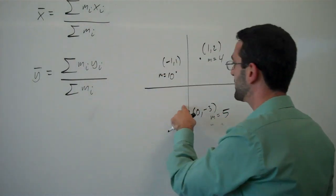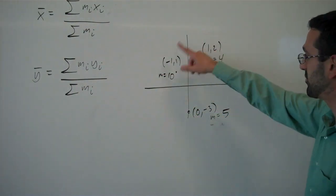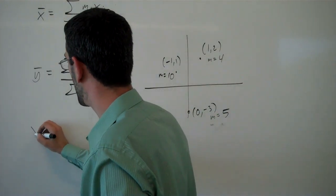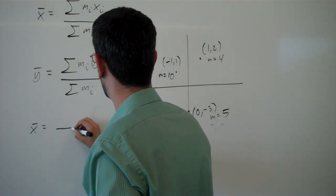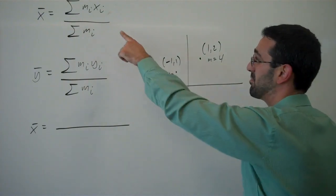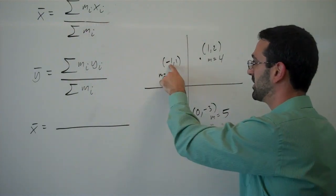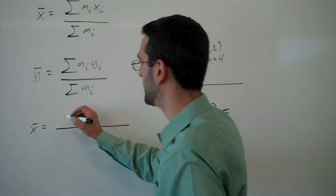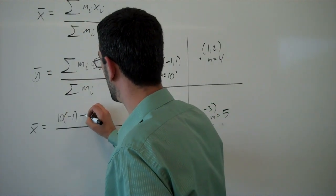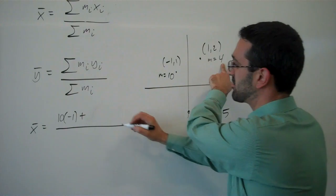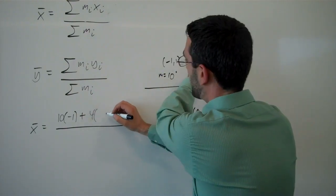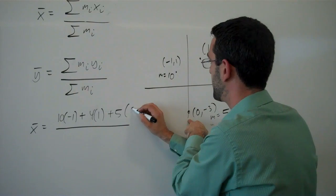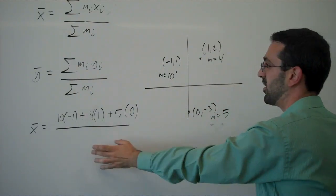Let's see if we can find the x and y center of mass for this system of point masses. For the x̄, we have, again, mass times x value. Here, mass of 10 times an x value of -1. So, 10 times -1. Here, we've got a mass of 4 at an x value of 1. Here, we have a mass of 5 at an x value of 0. On the bottom, we have the sum of the masses. So, 10 plus 5 plus 4.